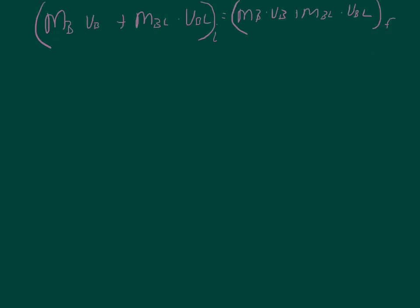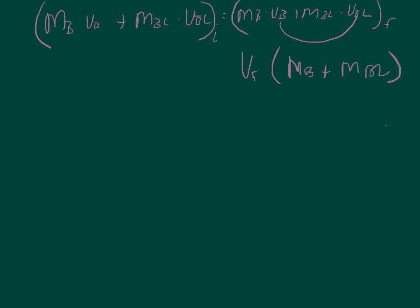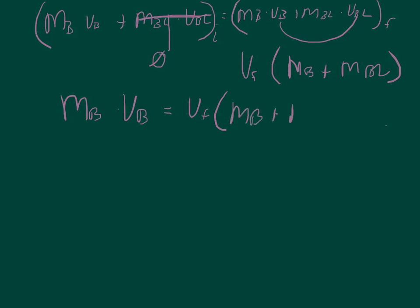The initial momentum of the bullet and block is equal to the momentum of the bullet and block in the final state. In the final state, the velocities of the bullet and block are the same. We can rewrite the right side as final velocity times the quantity mass of the bullet plus mass of the block. And since the block is initially at rest, its initial momentum is zero. So we have: mass of the bullet times velocity of the bullet equals final velocity times the mass of the bullet plus the mass of the block.